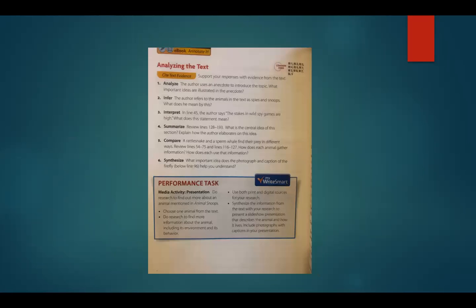Guys, take a second to look at these questions. Let's pay close attention to these parts. Number three: interpret. In line 45, the author says the stakes in wild spy games are high. What does this statement mean? You have to think about context clues and ways people use phrases. The next one: summarize. After reviewing lines 128 through 193, what is the central idea of this section? Explain how the author elaborates on this idea.